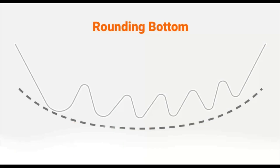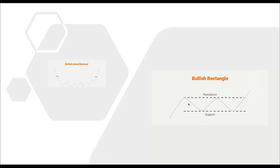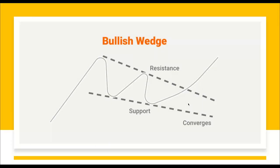Then we have rounding bottoms on our short-term charts. We don't have a specific resistance or support level, but we have a price range that is rounded. Price moves up, keeps falling down, moves up, falls back down — it's not exactly the same bottom each time, but we can see the semicircle developing.